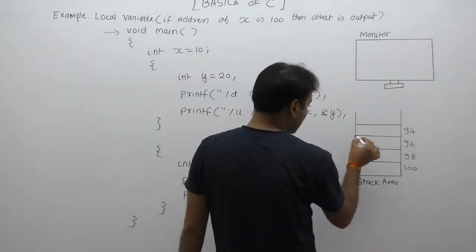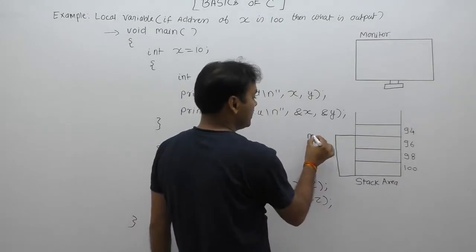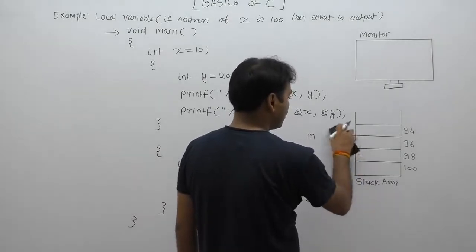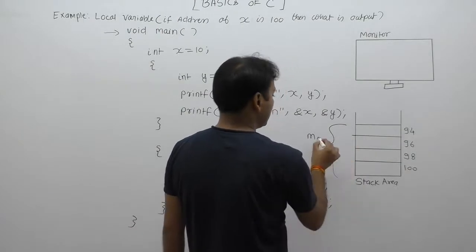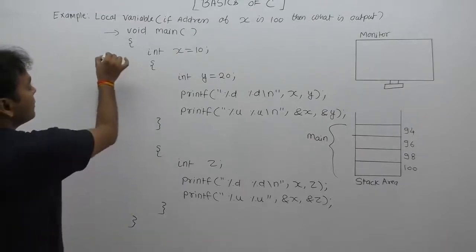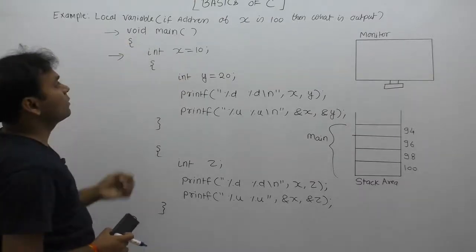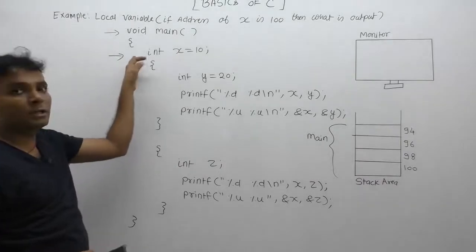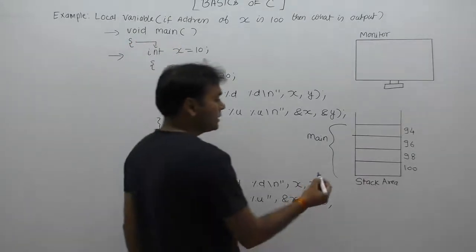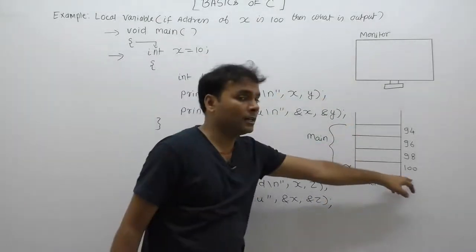What do we mean by loading a function inside the stack? Loading is the process of allocating memory space for the main function. Here inside the stack, the main function gets loaded. First of all, we are declaring variable x. Whenever execution control is inside the outer block, memory is allocated only for local variables of that block. This block is associated only for x, therefore memory will be allocated only for x. According to the given condition, the address of x is 100.